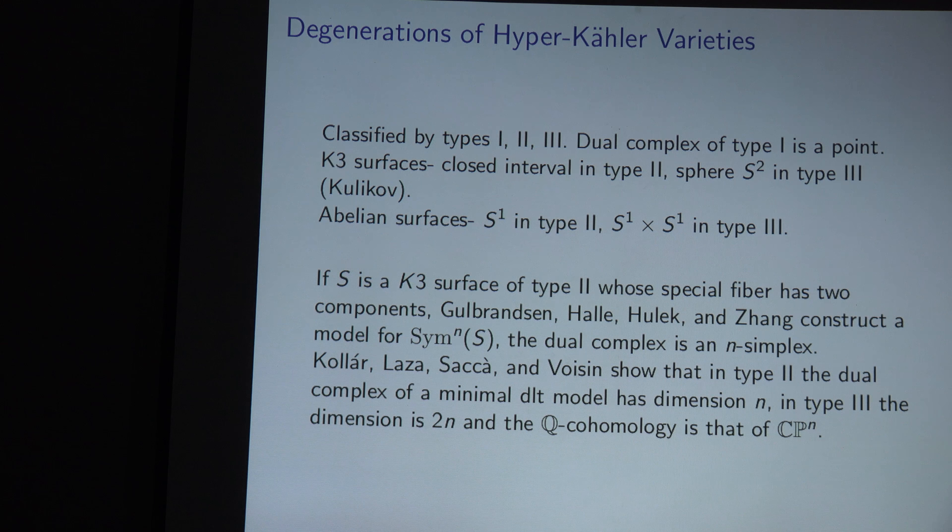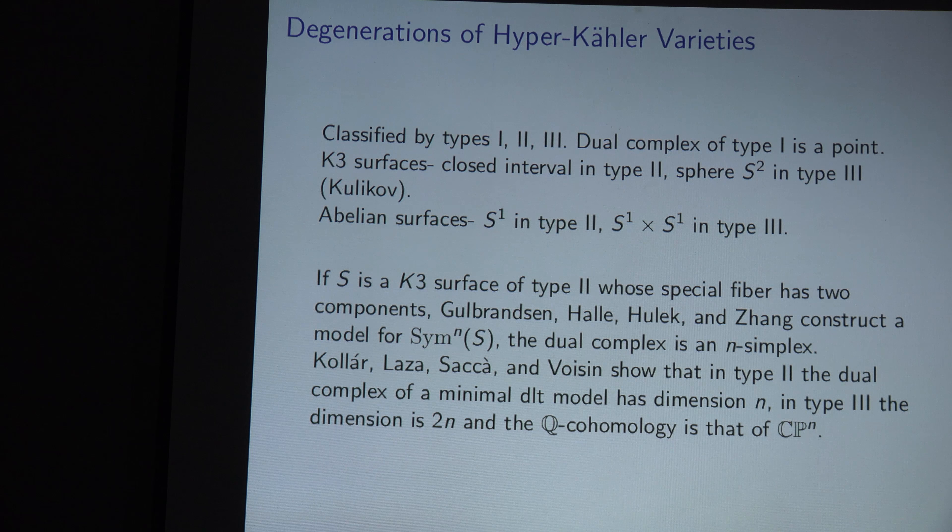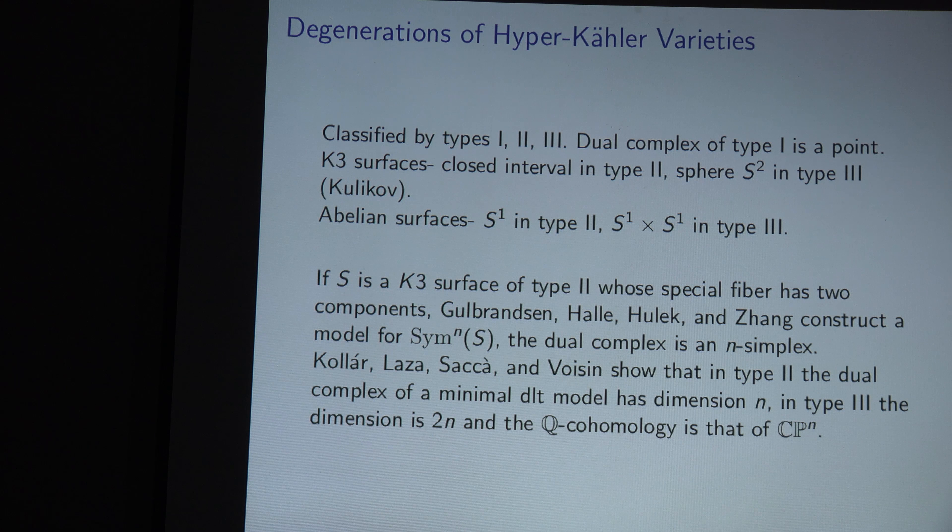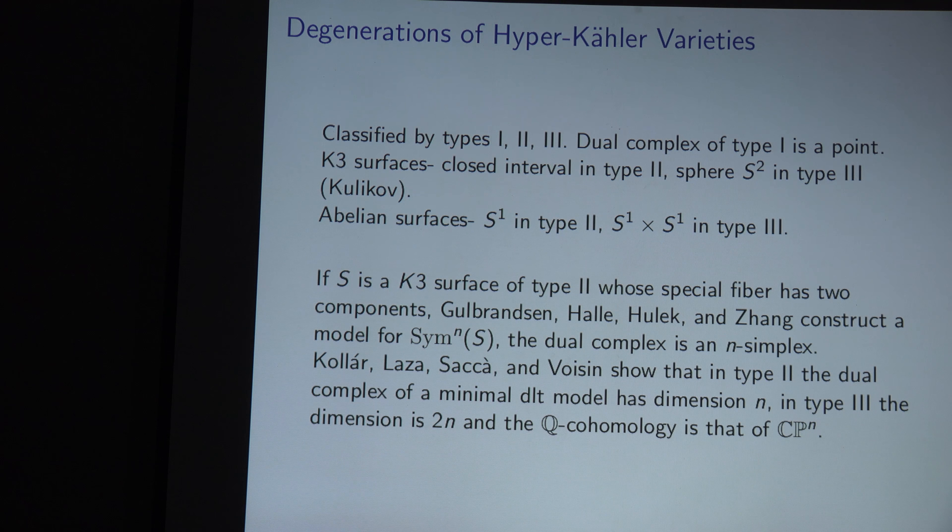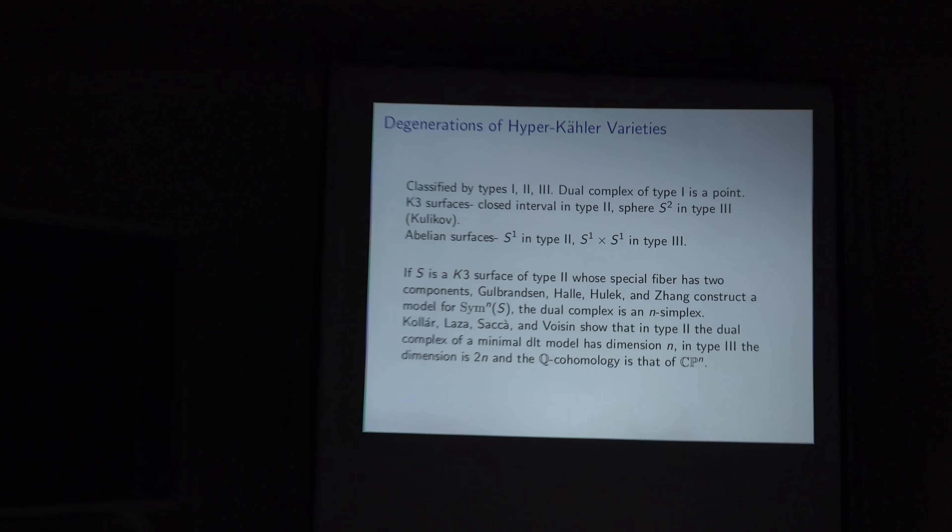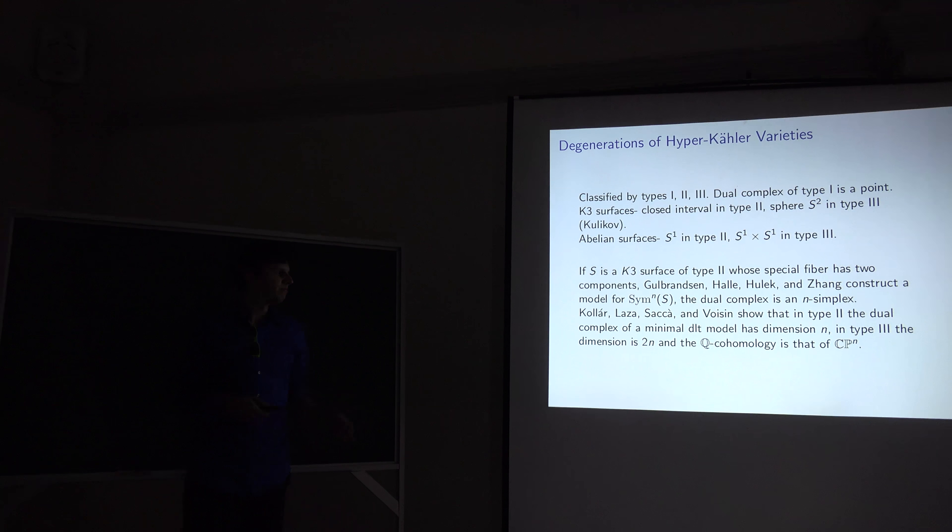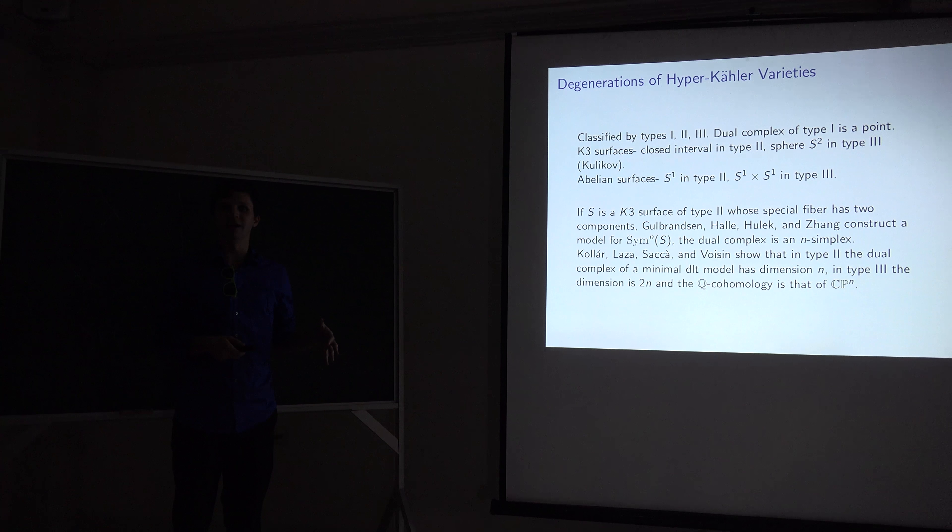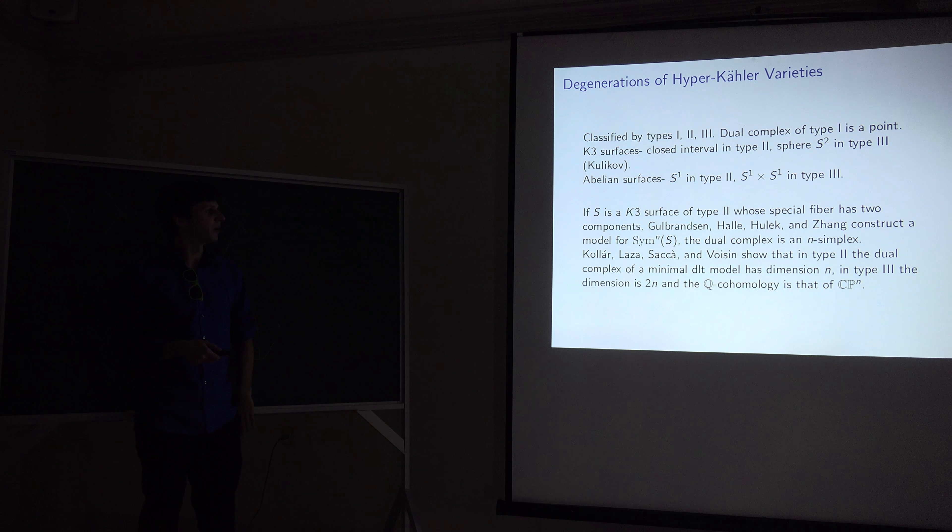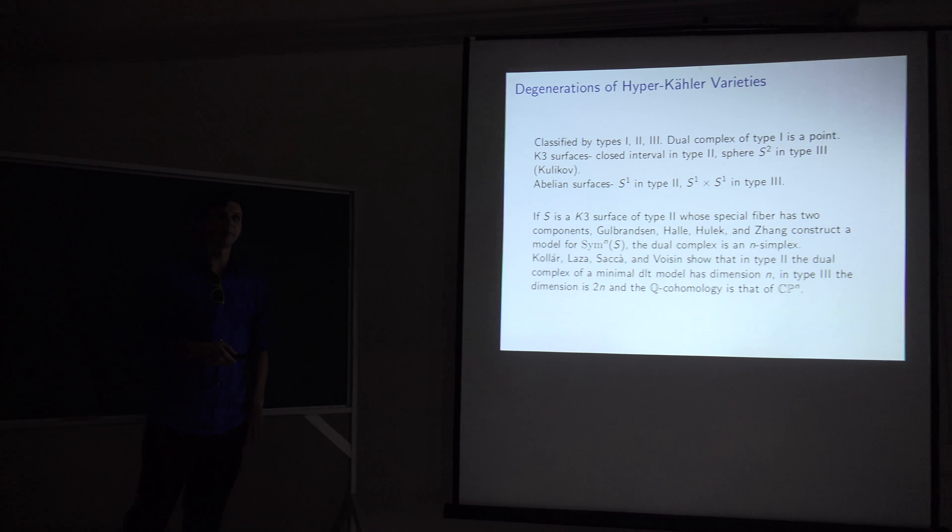And then the dual complex in mirror symmetry, we expect that to be the dual, the, that to look like the base of the fibration. That's kind of how it works in the SYZ conjecture. So it would make sense for in the type three case, the dual complex to actually be an honest CP^n.